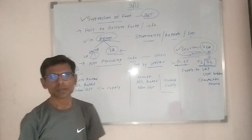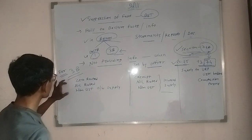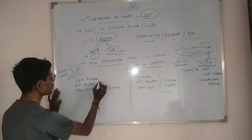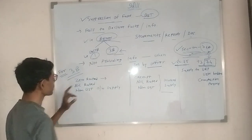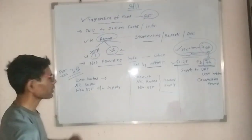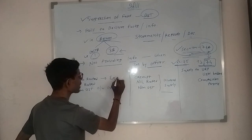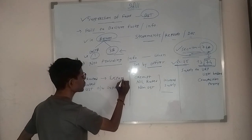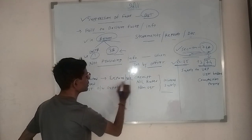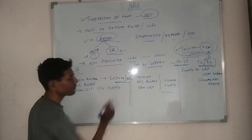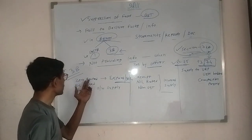Ab isko example se samajhte hain. Aapka GSTR-3B return hota hai. Usme aapko zero-rated supply ki information deni parh-ti hai. Zero-rated supply — aapka export ya phir SEZ-related supply, jahaan pe tax nahi lagta, usse bolte hain zero-rated supply.